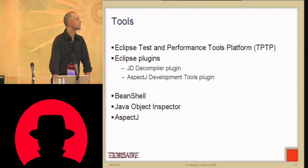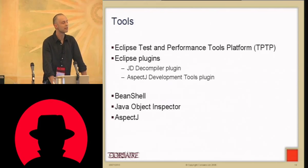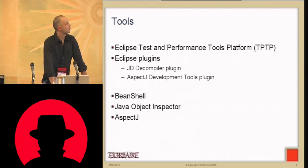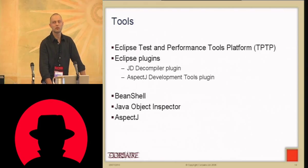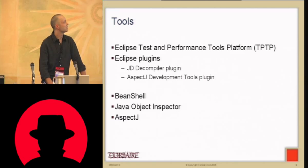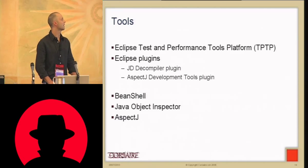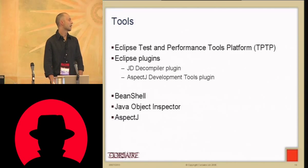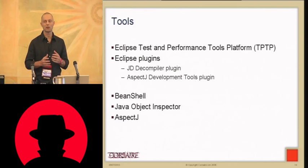The tools I'll be using are the Eclipse Test and Performance Tools Platform, TPTP — basically a profiler with other tools used to find out how a Java application runs. Then some Eclipse plugins: the JD Decompiler plugin and SPICJ tools. I still see a lot of people using JAD for decompilation, which really doesn't work — it's many years since it's been updated. JD Decompiler is written in Java, works on newer JREs, and is released as both a plugin and standalone app. I'll also be using the BeanShell and the Java Object Inspector. The star of the show is AspectJ, which lets us manipulate a lot of Java code without understanding bytecode.